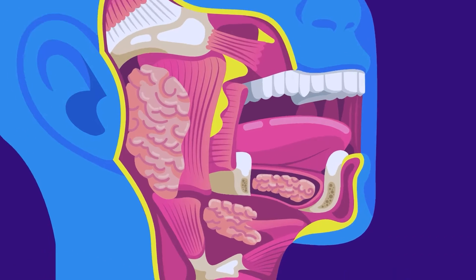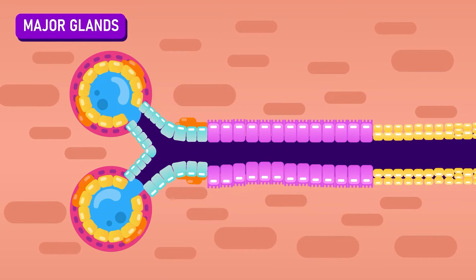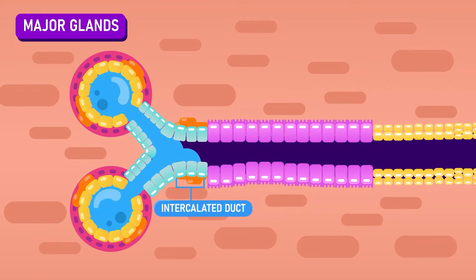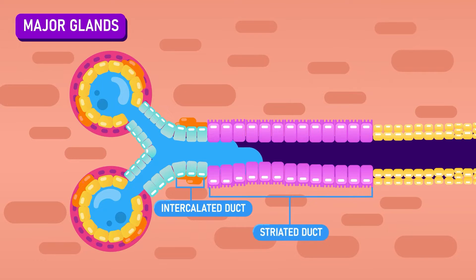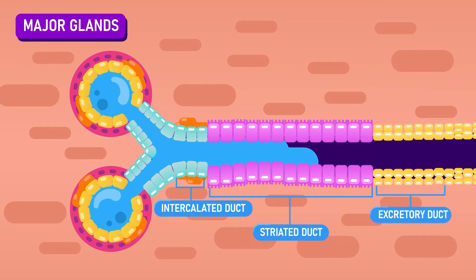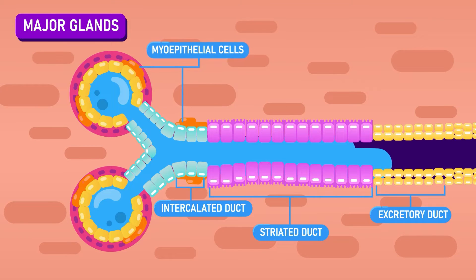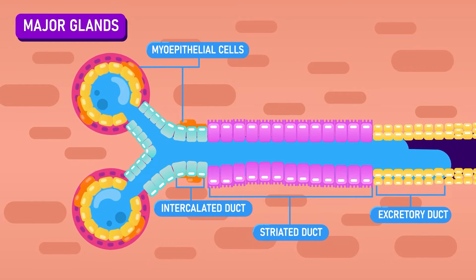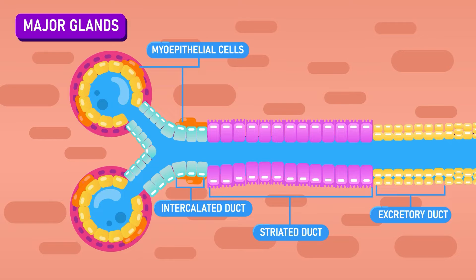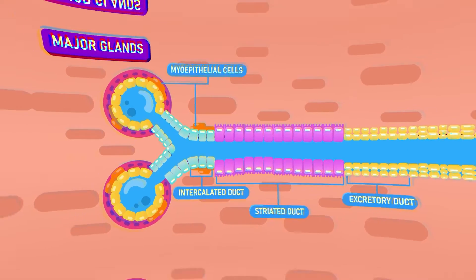Meanwhile, in the major glands, the saliva from the acini drains into the intercalated duct, then into the striated duct, and finally to the excretory duct. The acini and intercalated duct are surrounded by myoepithelial cells that accelerate the flow of saliva and reduce the luminal volume and the back permeation of fluid.